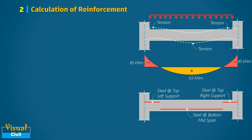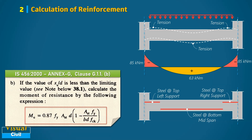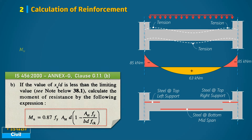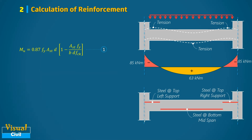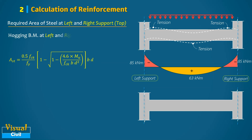The required reinforcement for the acting moment can be computed using the equation provided in Clause G-1.1(b). However, this results in a quadratic equation, so to simplify the calculation we use Equation 2. Let us calculate the steel required to resist the hogging moment at the support, which is 85 kilo-newton meter. This steel will be placed at the top of the support.